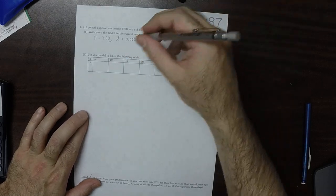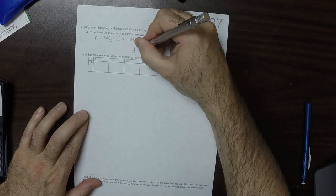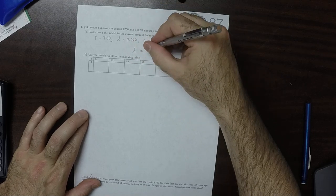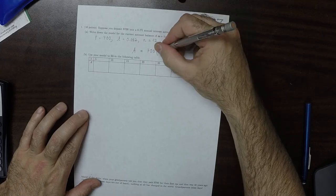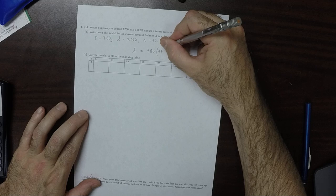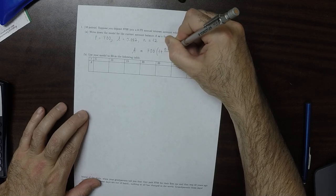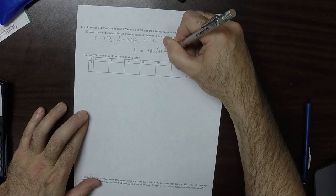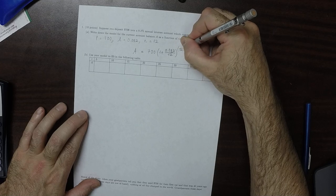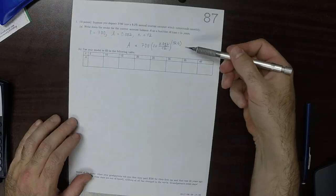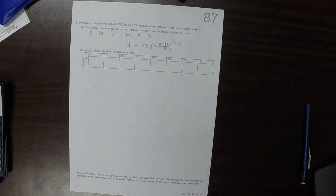So the model that we have, we have everything but T. So the model is A is 700 multiplied by 1 plus 0.082 over 12 raised to exponent 12T. So when we want to plug in any year, we can plug in T into that.